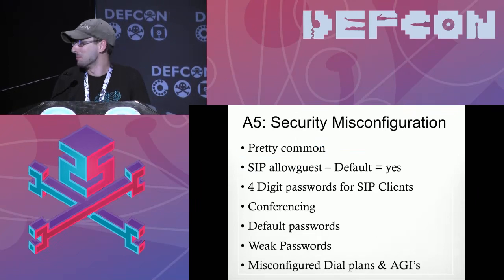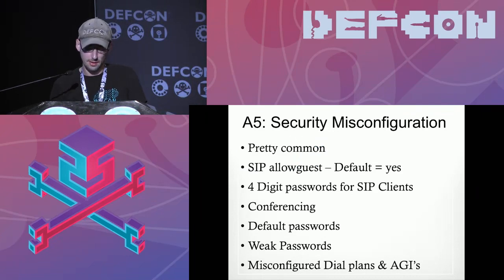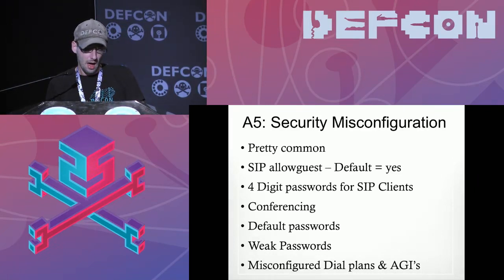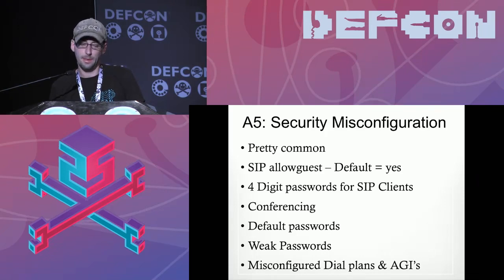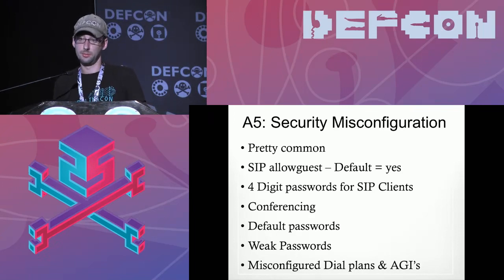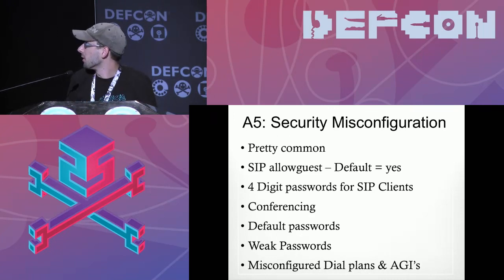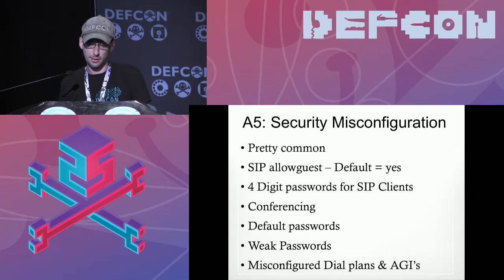Security misconfiguration — A5 — is very common. Issues include: SIP allow guests, letting anyone with a SIP client connect with difficult-to-control context; four-digit passwords for SIP clients that match the extension number; having your username the same as the authentication username; conferencing misconfigurations that let someone dial in and then dial out; default and weak passwords; and misconfigured dial plans and AGIs — AGI being like the CGI of the Asterisk system — which are probably the most common misconfiguration.